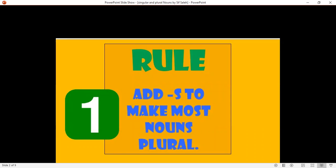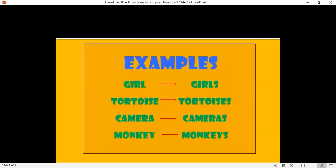Add S to make most nouns plural. Girl, girls. Tortoise, tortoises. Camera, cameras. Monkey, monkeys.